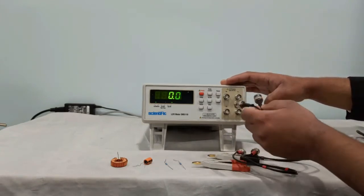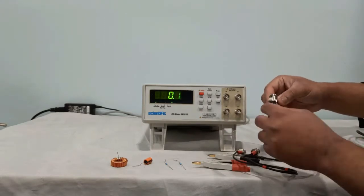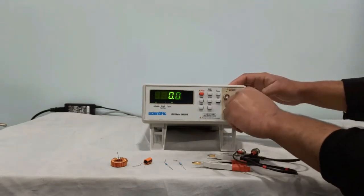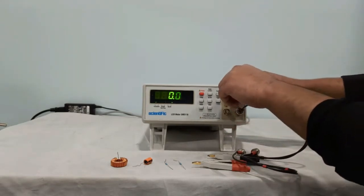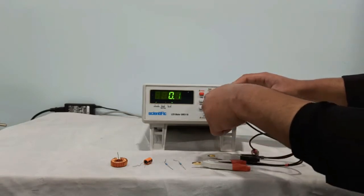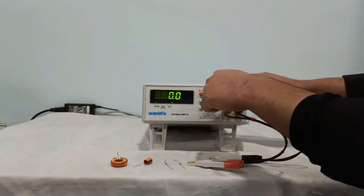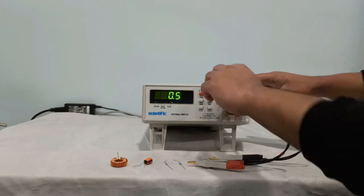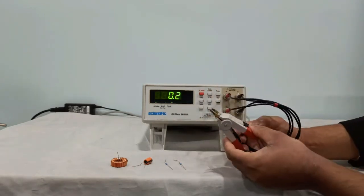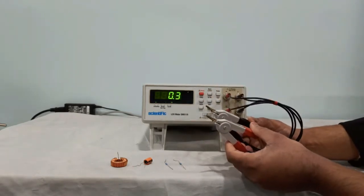We need to connect this Kelvin probe to the BNC connectors. Black will go to LS and LD, and red connectors will go to HS and HD. This is how we connect the Kelvin probe. These are the two terminals where you can connect your DUT.